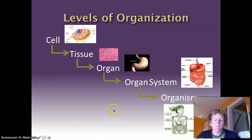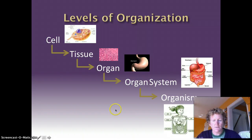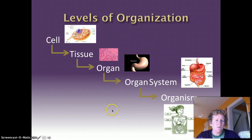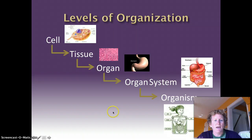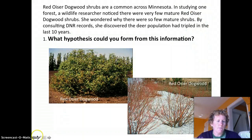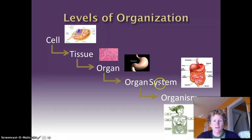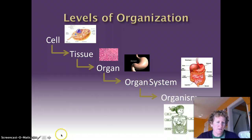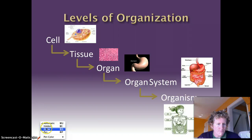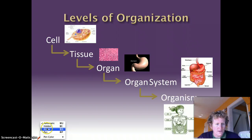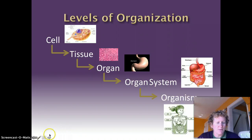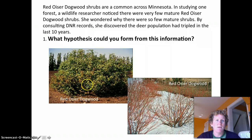The correct order is: cells, tissues, organs, organ systems, and organism. One way some students remember this is the phrase 'Cats Take Onions Outside Often' — a kind of unusual but funny way to remember the levels.